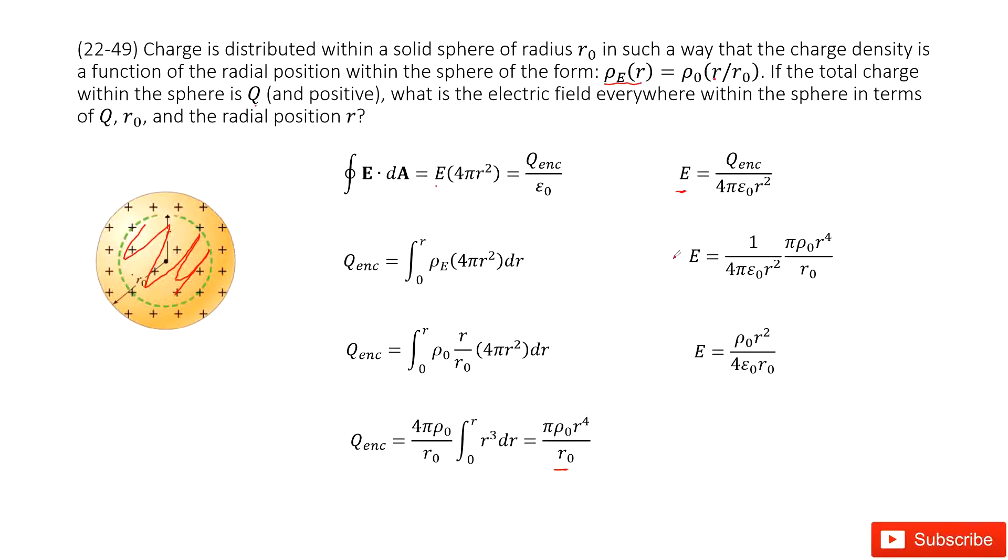In this case we input the enclosed charge inside this function. We can see pi and pi cancelled. R squared and R squared cancelled. So we get the answer there.